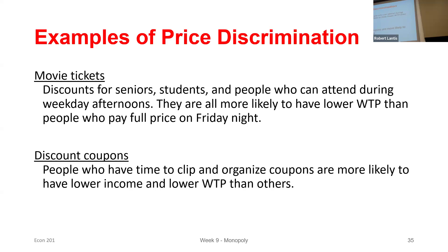How can companies do price discrimination in person? You can still do it — for example, senior citizen discounts. If I know there are attributes about people that make it more or less likely they can pay a higher or lower price, I can exploit that. And coupons: Kroger sends me these all the time and I end up using hardly any of them because I don't have time. But people on a tight budget who are willing to look through those discount coupons are more likely to not pay a high price — they might only buy the good if they have a coupon.